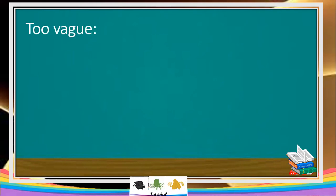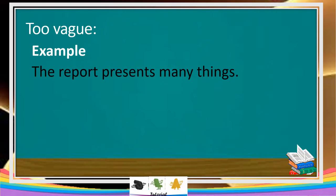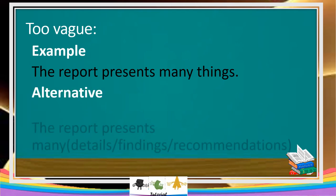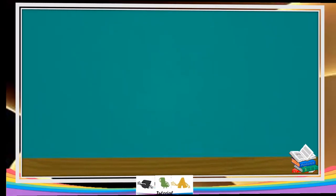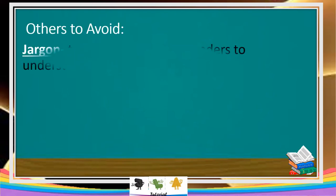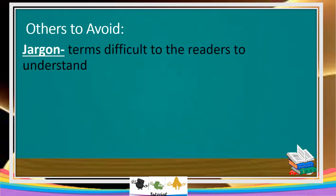And why we need to avoid vague information: example — 'The report presents many things.' What are those things? A better alternative: 'The report presents many details' or 'findings' or 'recommendations.' This is more specific about what the writer is trying to present. Additional things to be avoided: jargon — terms that are difficult for readers to understand because they are only applicable to a specific field.